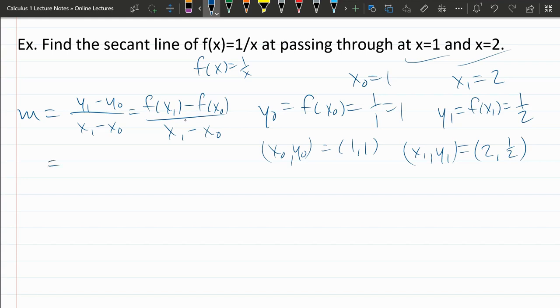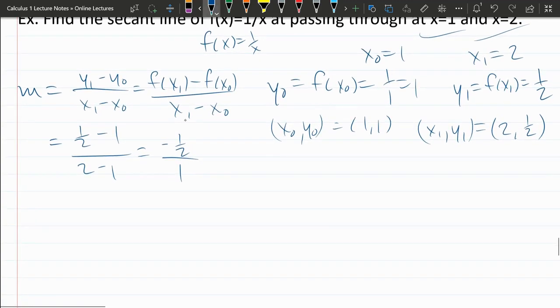So our y values, y value 1 is 1 half, y value 0 is 1. 2 minus 1 is 1. That's easy. The subtraction here, 1 half minus 1 is negative 1 half. You could go common denominator for this. And dividing by 1 does nothing. So this is just negative 1 half. And that is our slope.